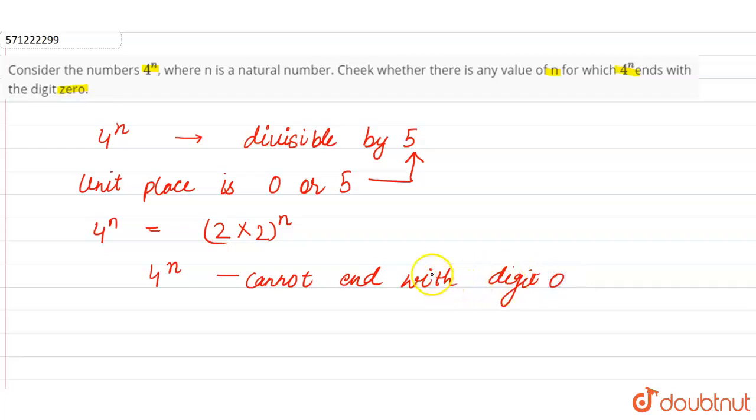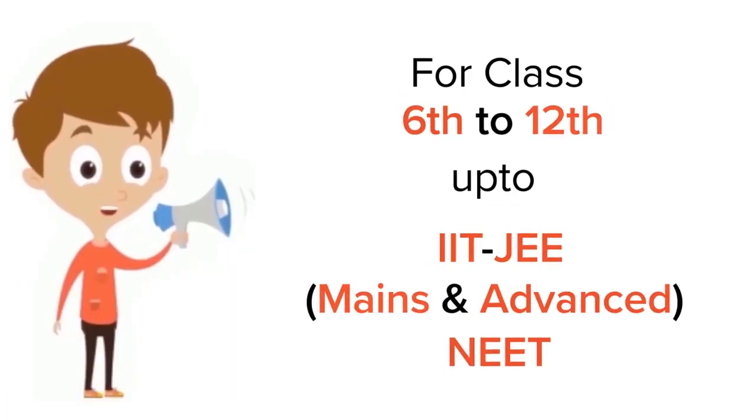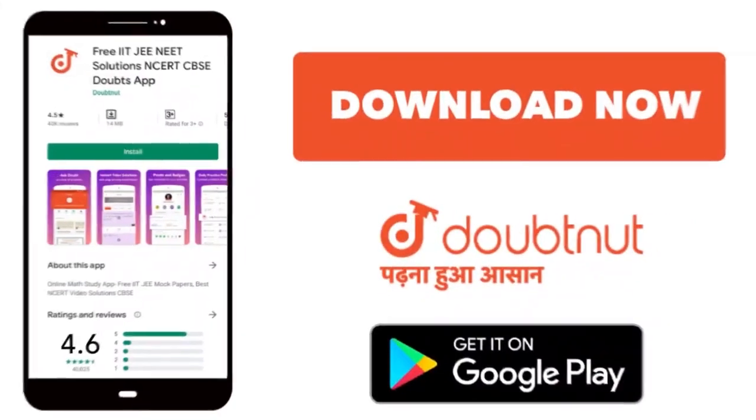cannot end with digit 0 for any natural number n. For class 6 to 12th, IIT-JEE and NEET level, trusted by more than 5 crore students. Download Doubtnet app today.